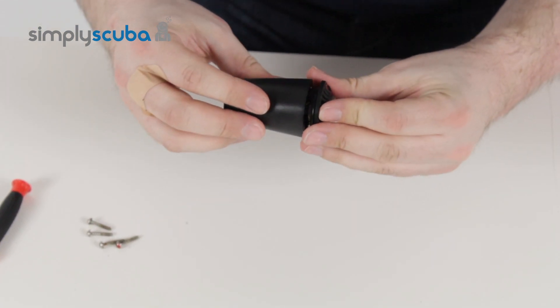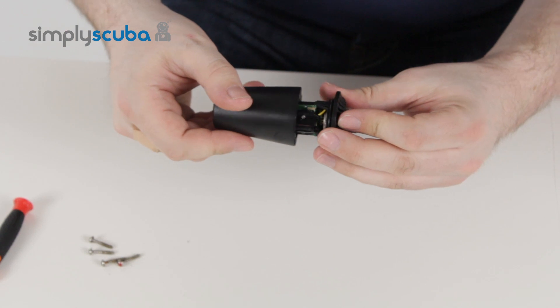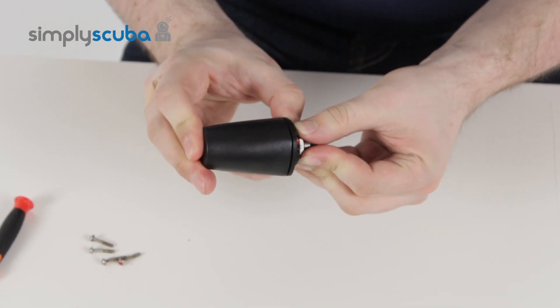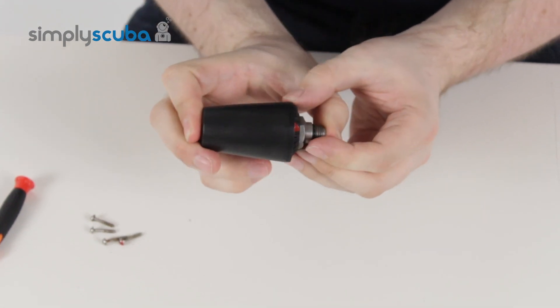You marry them up, it'll only go on one way, and then just push it nice and gently until it's together.